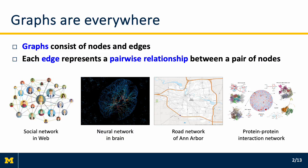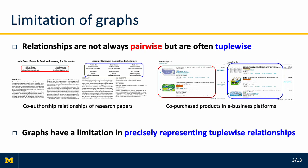Graphs consist of nodes and edges, and each edge represents a pairwise relationship between a pair of nodes. Graphs can be used in various domains, such as social networks on the web to protein-protein interaction networks in biochemistry. However, graphs have a limitation in that real-world relationships are not always pairwise, but are often tuple-wise.